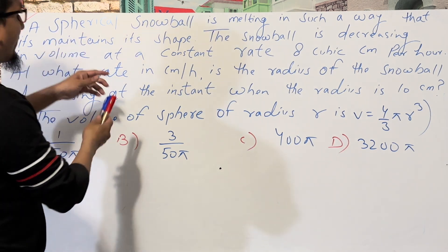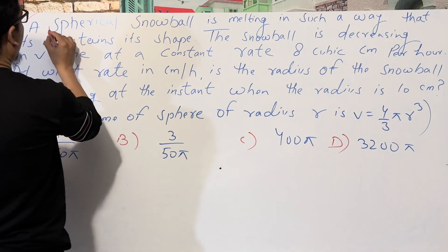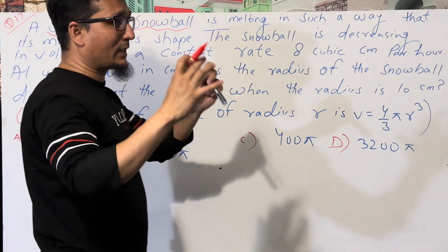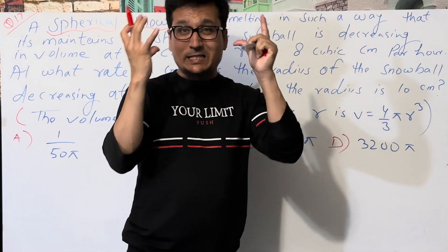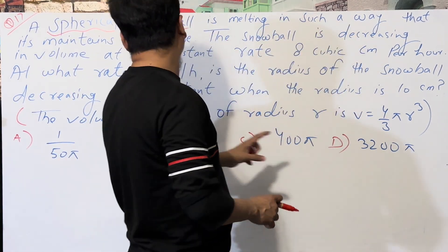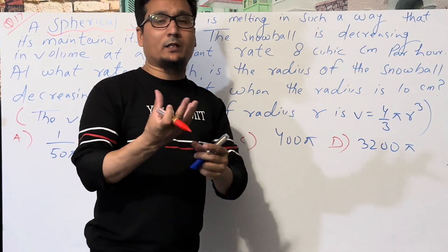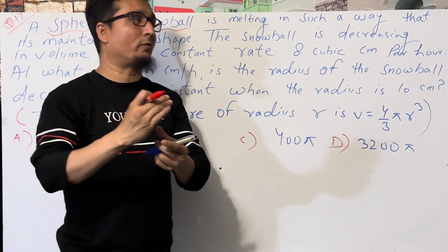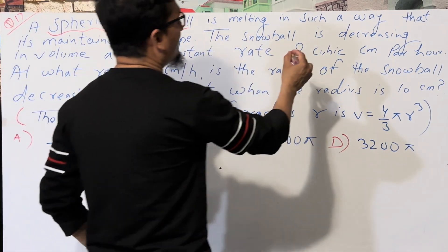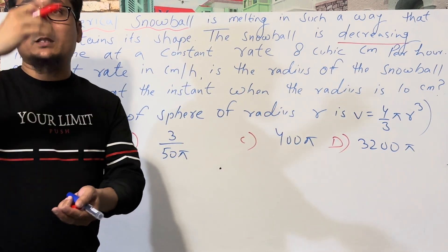The question mentions a spherical snowball — so a sphere, a 3D shape, is given. It is melting in such a way that it maintains its shape. So the snowball is decreasing — and 'decreasing' means something is getting smaller, which implies a negative slope.